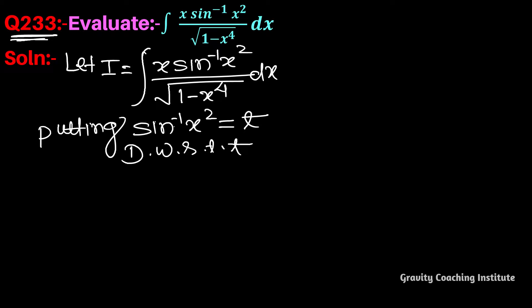So we get the differentiation of sine inverse as 1 upon under root 1 minus x square whole square, and then x square ka differentiation gives 2x.